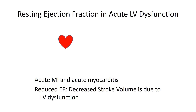We use ejection fraction as the measure of LV function. In acute dysfunction — say a normal heart develops a myocardial infarction or acute myocarditis — the stroke volume decreases, contractility decreases, and the ejection fraction comes down. So in acute dysfunction, we do get a quantitation of systolic function.